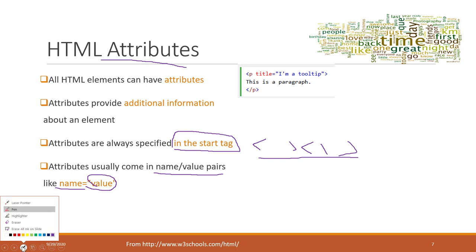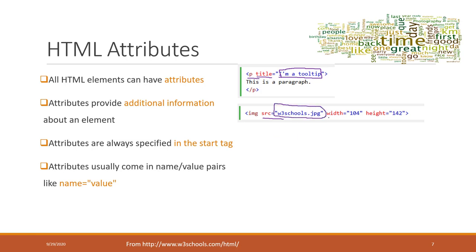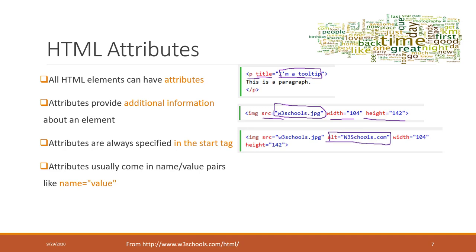For example, for a P paragraph tag, we can add a title attribute with the value 'I am a tooltip.' For images, we have the source attribute that indicates where the image comes from, and we can also define the width, the height, and alternative text for when the image cannot be displayed correctly.